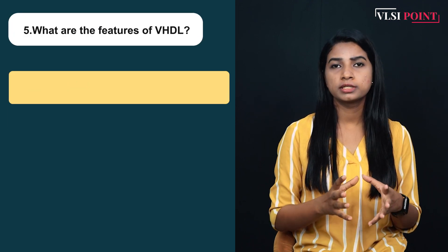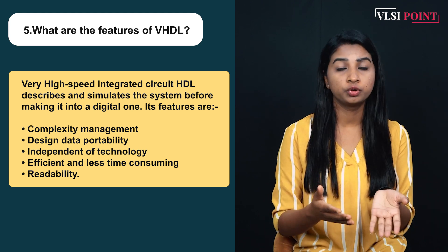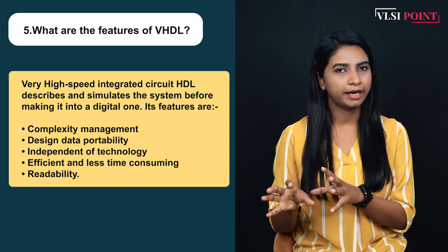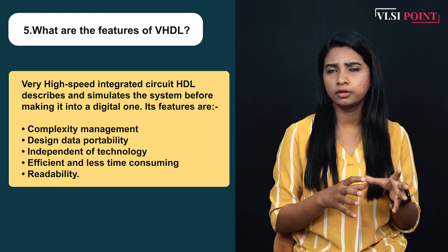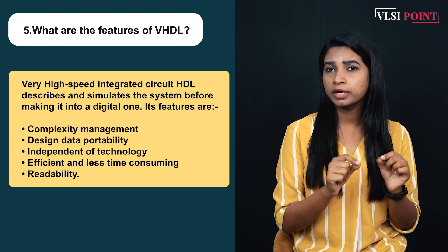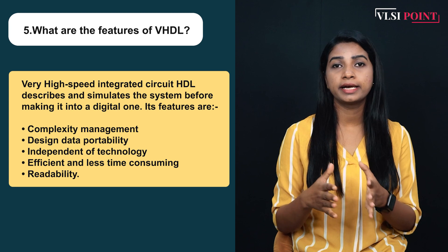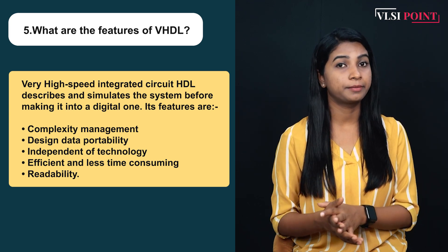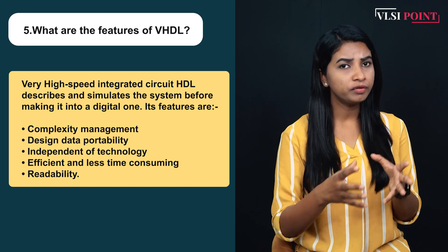Our next question is: what are the features of VHDL? In my Verilog intro videos, I have explained what is Verilog, what is VHDL, and the difference between these two languages. VHDL is a very strongly typed language — if you make even a small mistake you will get a compiler error. However, in Verilog you will not get that kind of error, so Verilog is a loosely typed language. Verilog is very much similar to the C language, whereas VHDL is similar to ADA and Pascal. In Verilog you have simple data types; in VHDL you have complex data types. VHDL is independent of technology, very efficient, less time consuming, and has more readability. So these are the features of VHDL.